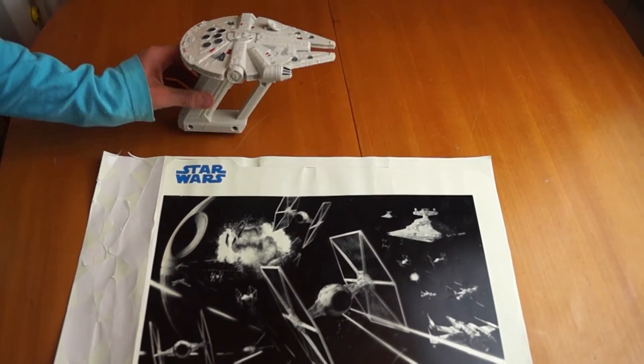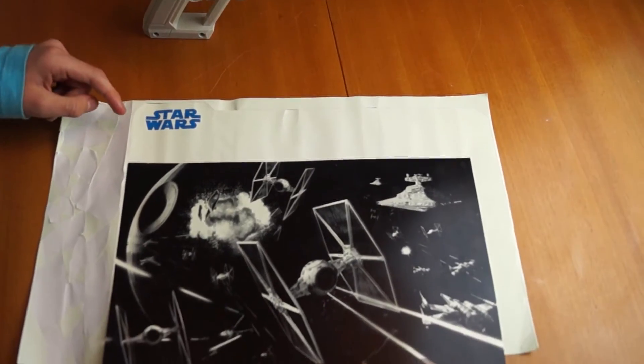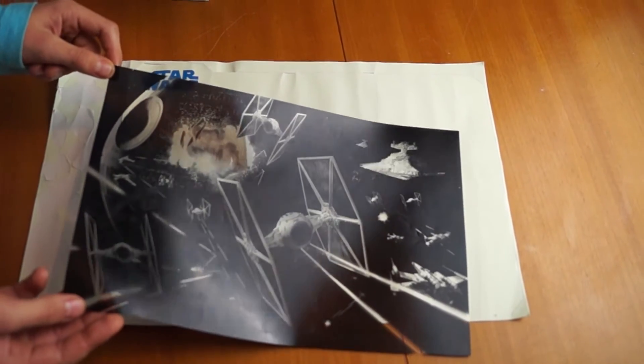В него входит сокол тысячелетия, экран, накапливающий энергию света и трафарет.